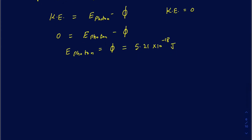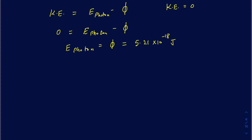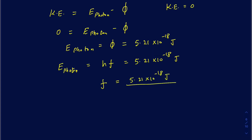Since I know the energy of the photon, it's straightforward to find the frequency. The energy of the photon equals Planck's constant times frequency, so: 5.21 times 10 to the minus 18 joules = 6.62 times 10 to the minus 34 joule-seconds times frequency. Solving for frequency gives 7.87 times 10 to the 15 per second, which is hertz — that's the minimum required frequency.